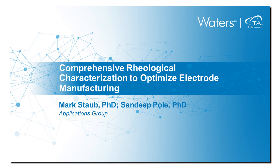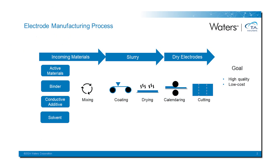Thank you for joining our webinar on utilizing comprehensive rheological characterization to optimize electrode manufacturing. Along with my colleague Sandeep Pohl, we will take you through electrode powder and slurry characterization capabilities from TA that can enable early-stage optimization in cathode and anode production. The process of manufacturing an electrode begins by mixing an active anode or cathode material with a binder and conductive additive in an appropriate solvent.